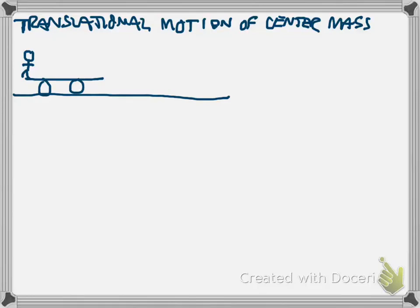Hi there. Sometimes we have problems where a system of objects, like a person on a cart, is moving along with some velocity, and then at some point one of the objects begins to move independently, like the person will start walking forward.